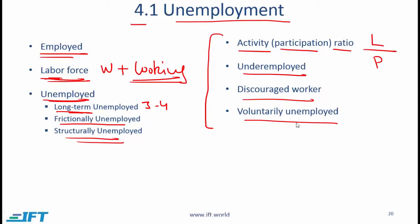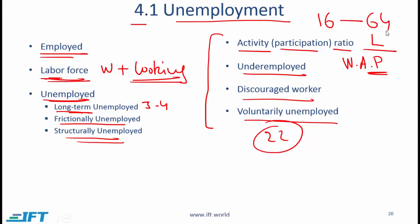Voluntarily unemployed would be someone who is of working age — for example, a 22-year-old pursuing a master's degree and voluntarily not working — classified as voluntarily unemployed. One clarification: when we say population, we mean working age population, which in most countries is ages 16 to 64.